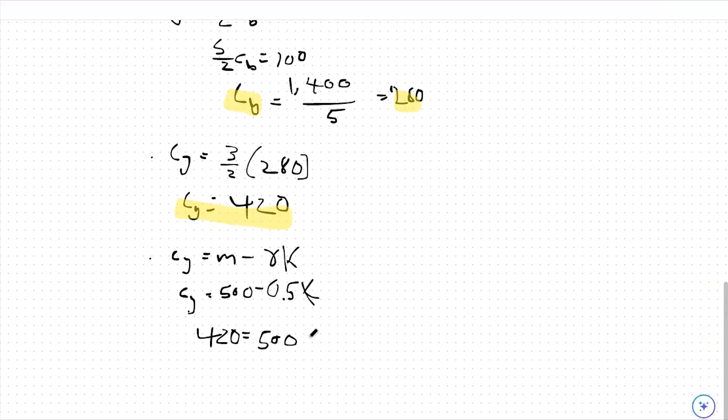So 420 will equal 500 minus 0.5K. So negative 80 will equal negative 0.5K, or K is equal to 160, $160 worth of insurance.